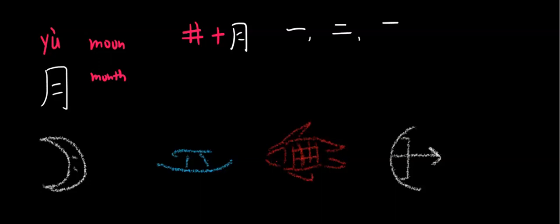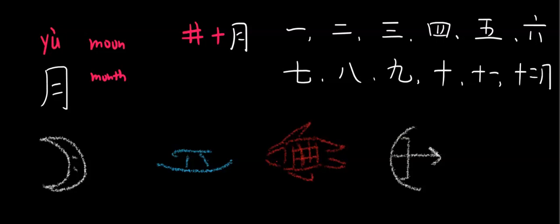March 三月. April 四月. May 五月. June 六月. July 七月. August 八月. September 九月. October 十月. November 十一月. December 十二月.